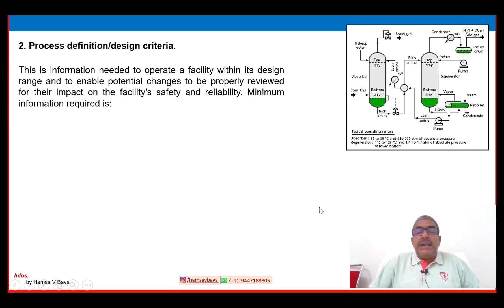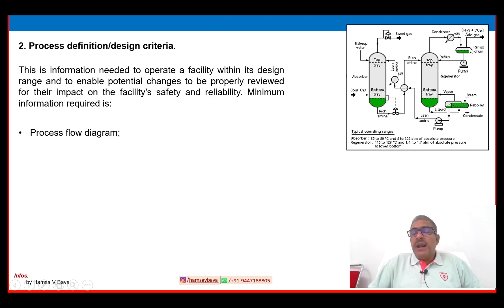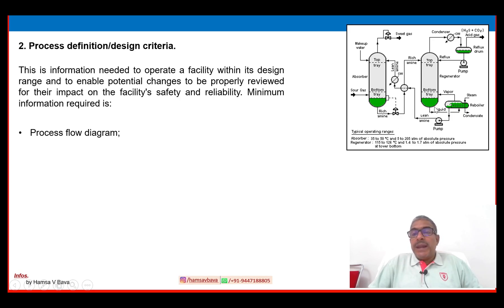Number two: process definition and design criteria. This is the information needed to operate a facility within its design range and to enable potential changes to be properly reviewed for their impact on safety and reliability. Minimum information required includes a process flow diagram — PFD. A simple PFD provides information on where the process starts, the various equipment involved, and finally what product or byproduct is being produced.